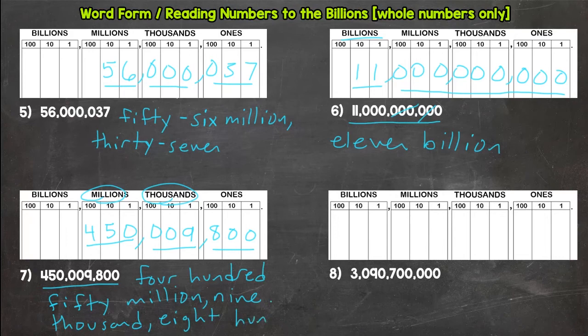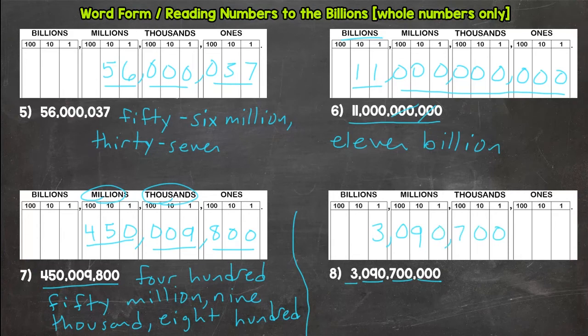Done with seven. Let's move to number eight. And it looks like we have ones, thousands, millions, billions—we're gonna go up to the billions on this one. So three billion, ninety million, seven hundred thousand, and that is it. So three billion, ninety... what am I doing?